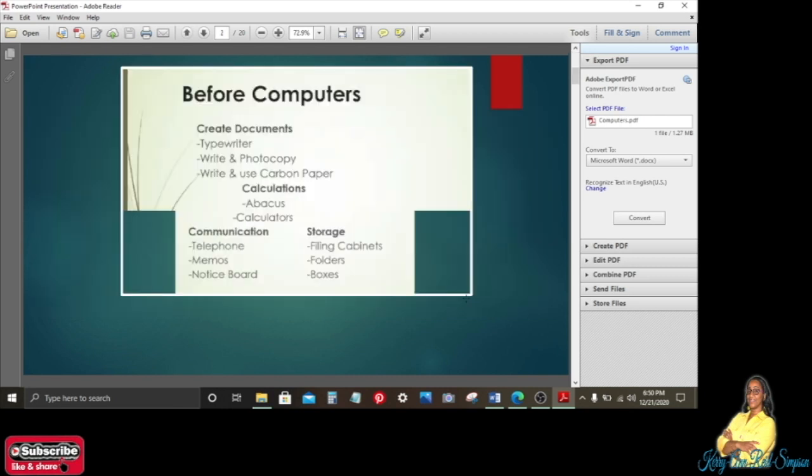Next we're going to be looking at what we used to use to prepare documents, to do calculations, to communicate, and to store before computers. So in order to create documents, what we used to use are typewriting machines, which is a typewriter. Sometimes we would write and photocopy what we write, as well as we would write and use carbon copy to get copies of what is written. In terms of calculations, abacus and calculators were used. People still use those two, but it is not in use as much.